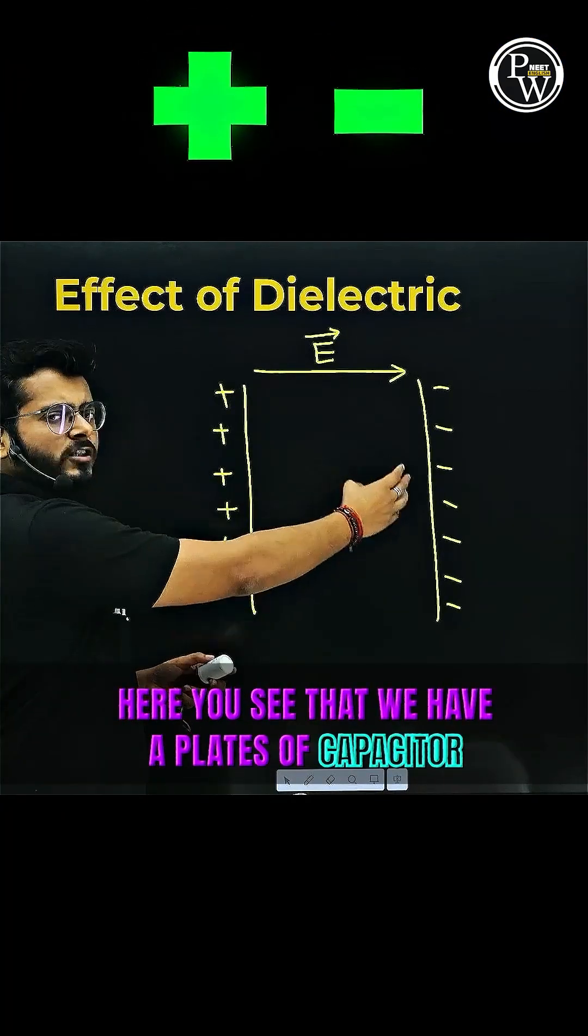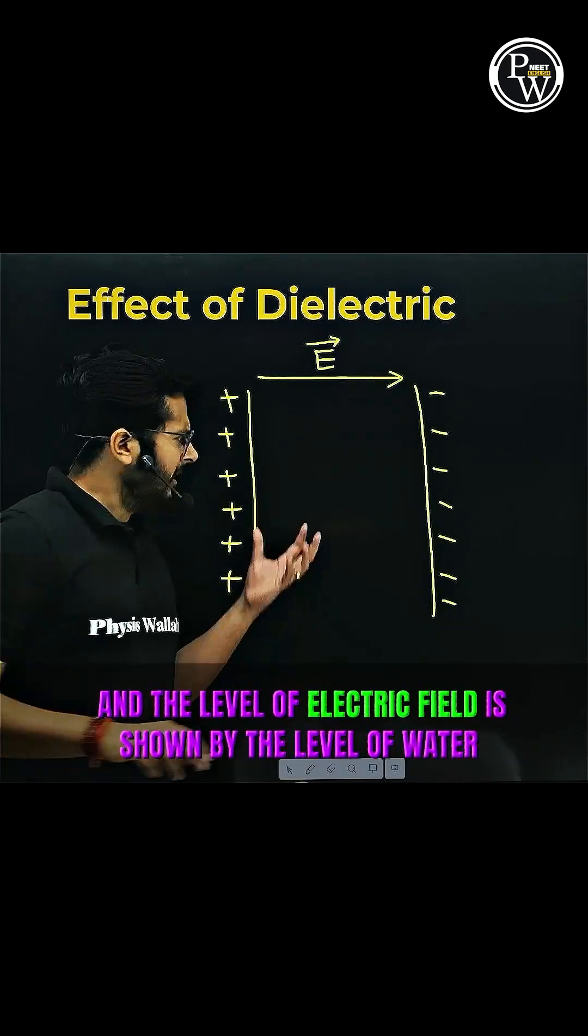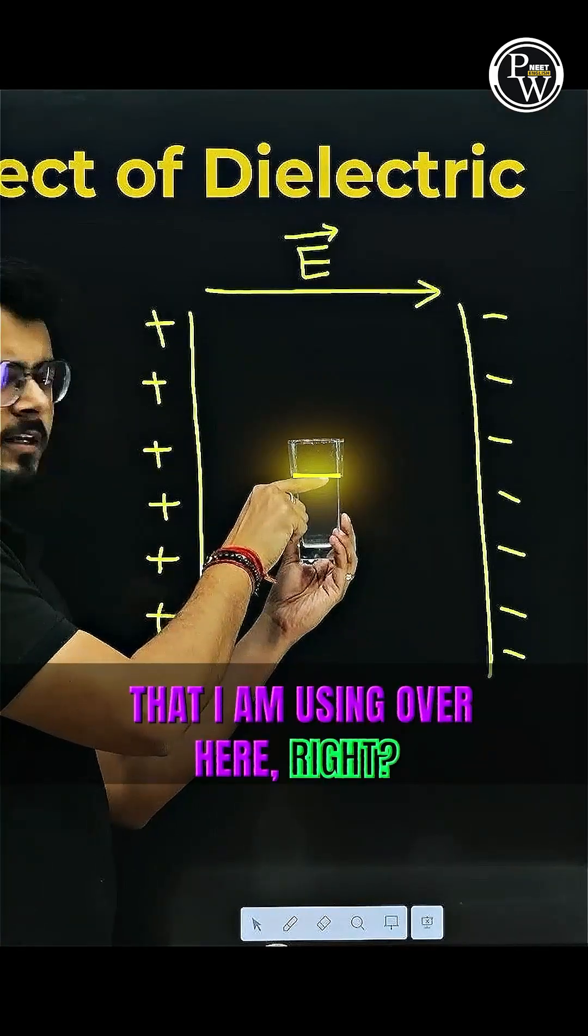Here you see that we have a parallel plate capacitor and the electric field is setting up between the positive and negative plate. The level of electric field is shown by the level of water that I am using over here.